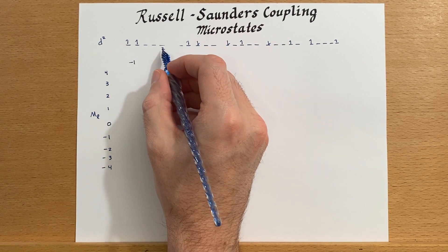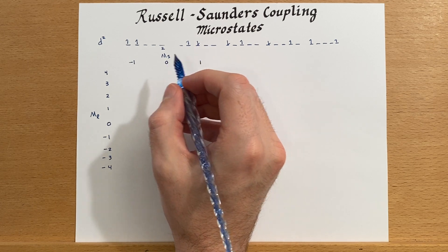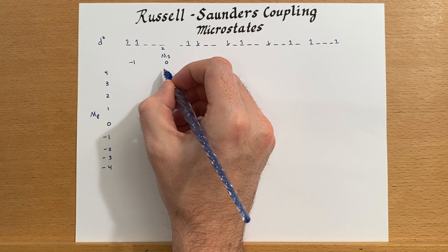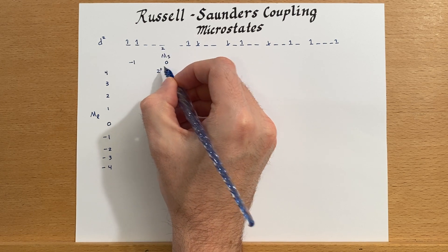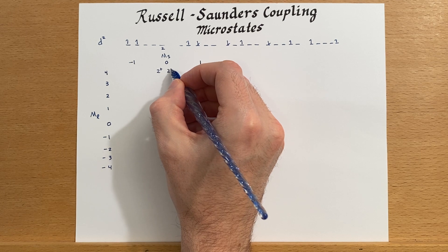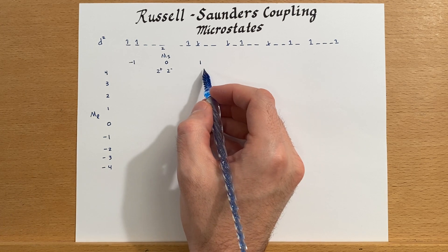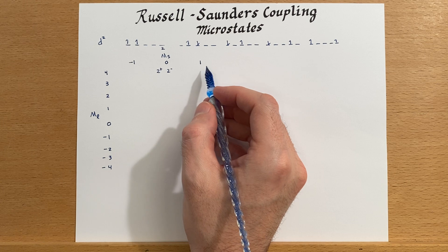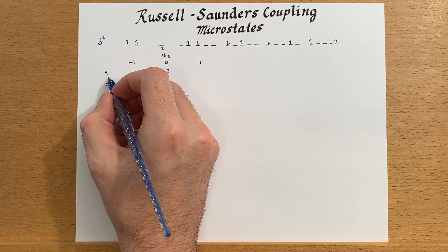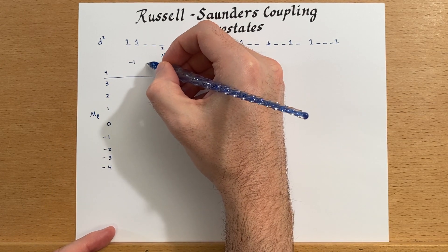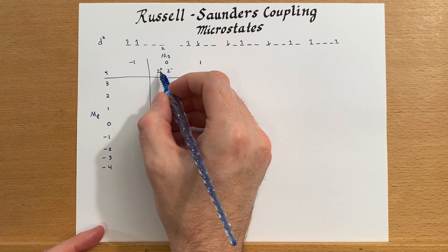It is possible to have two electrons in the m_l = +2 orbital when they don't have the same spin. So we write: m_l = (2+, 2−), meaning one spin-up and one spin-down. Similarly, over at m_s = +1, both electrons would have to be spin-up in the same orbital — not allowed. So far we have one state recorded.